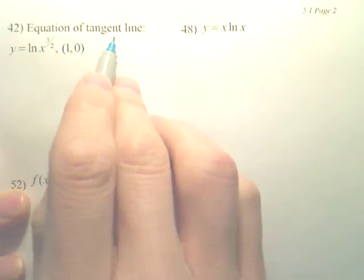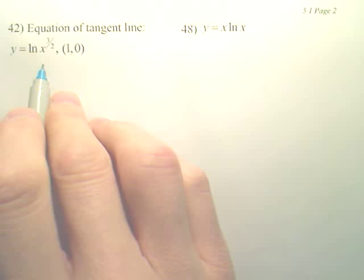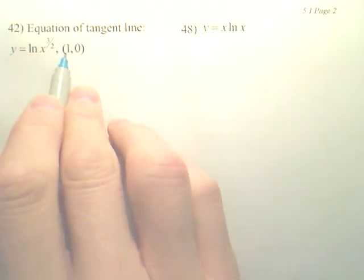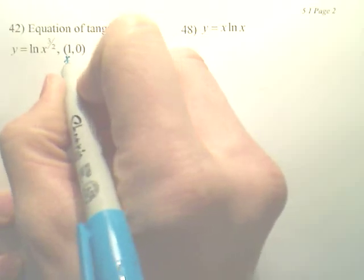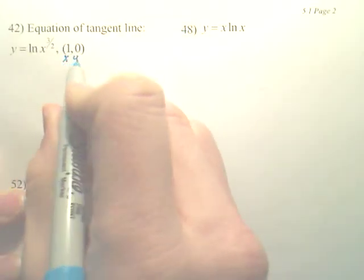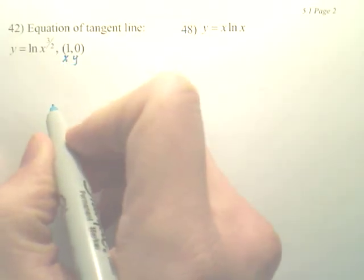The equation of the tangent line. To get that, we first need to find the derivative, plug in 1, that will give me the slope, and then you have x, y. Together with x, y and the slope, we can get the equation of the tangent line.